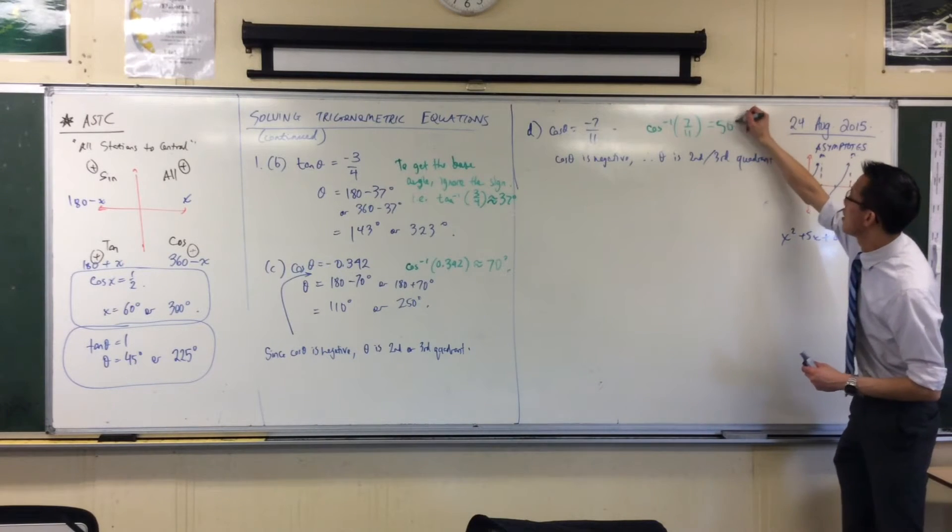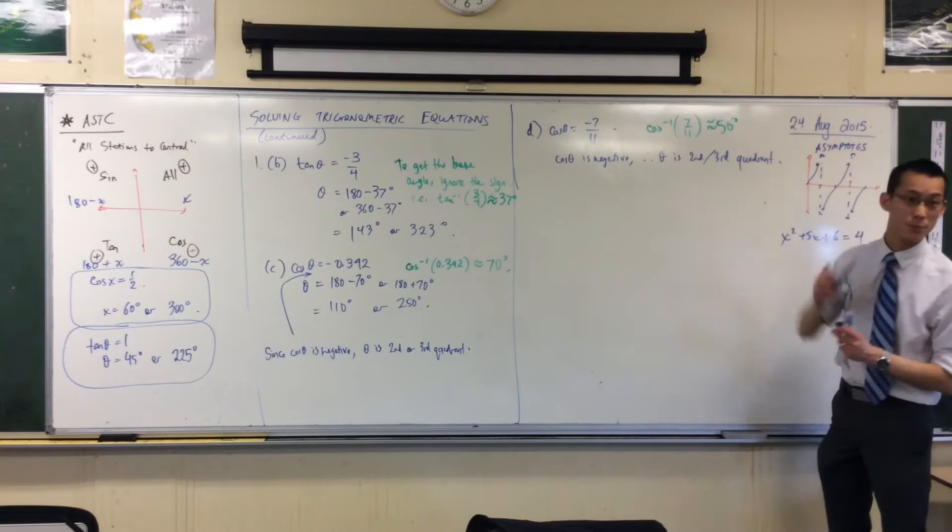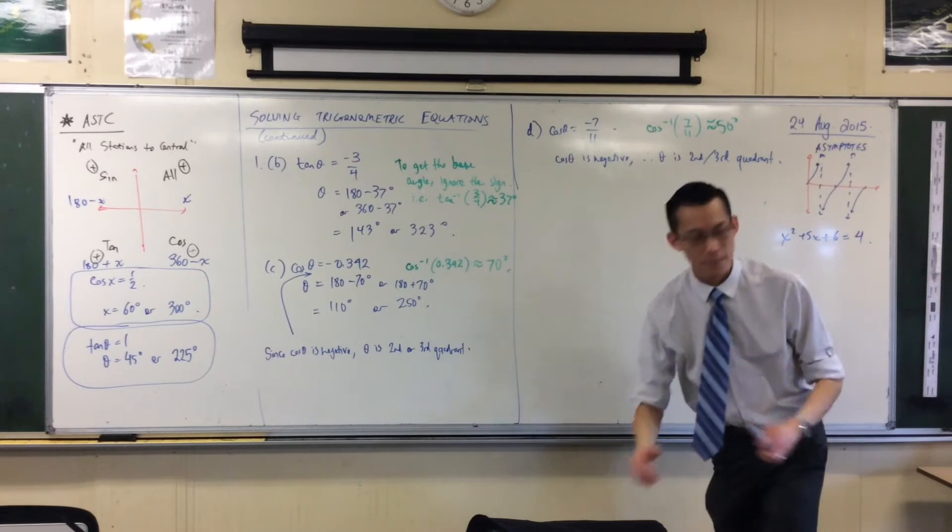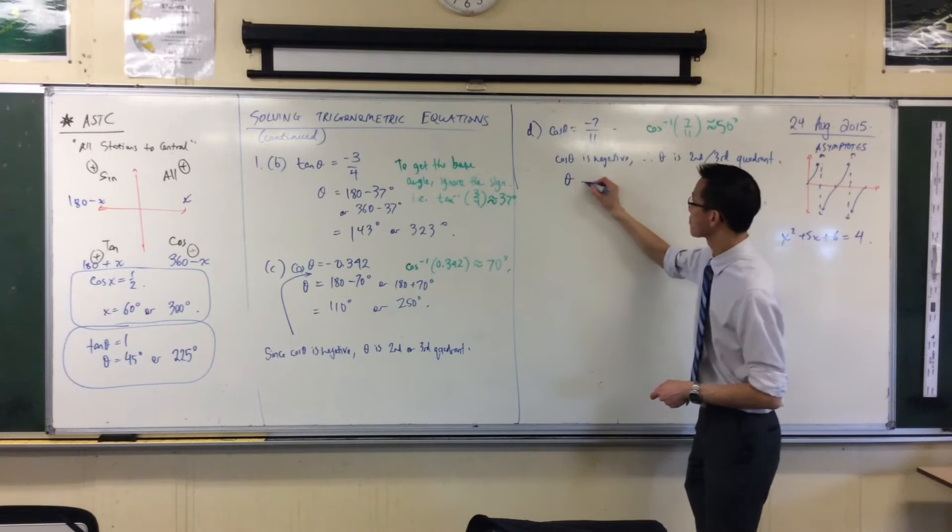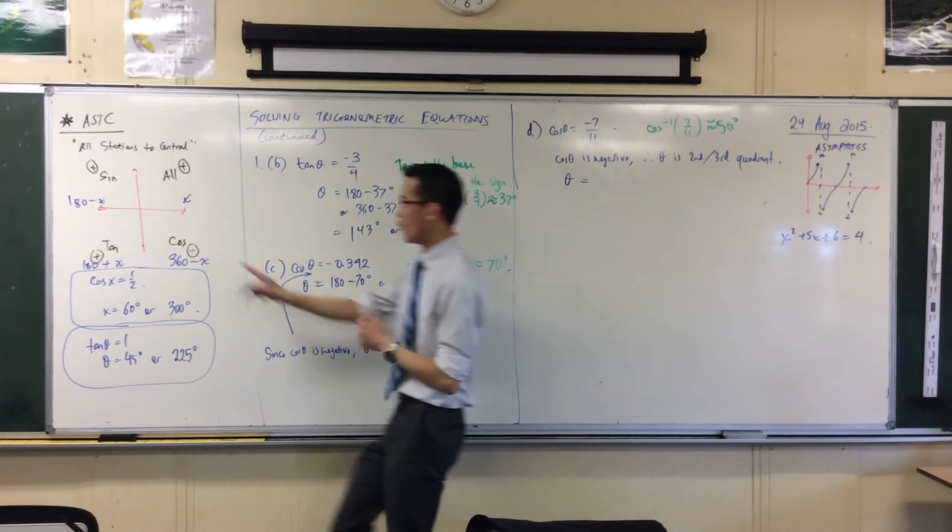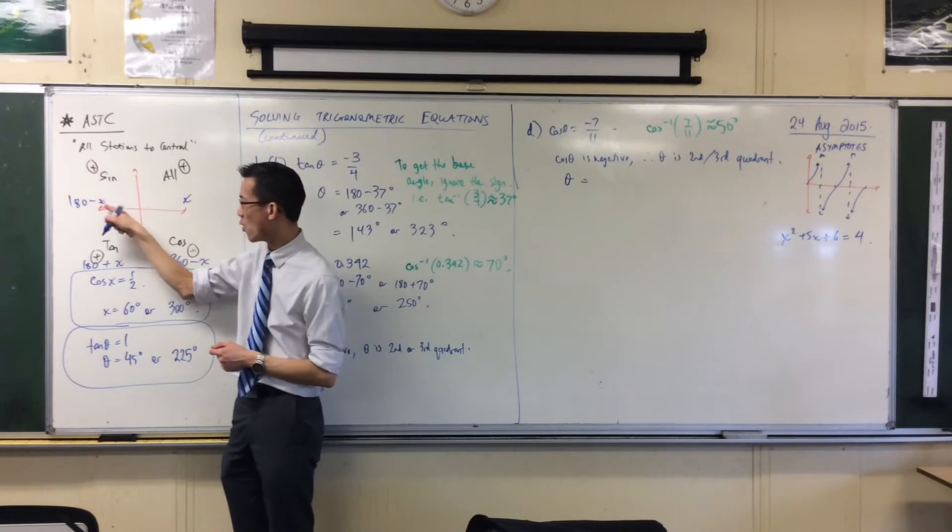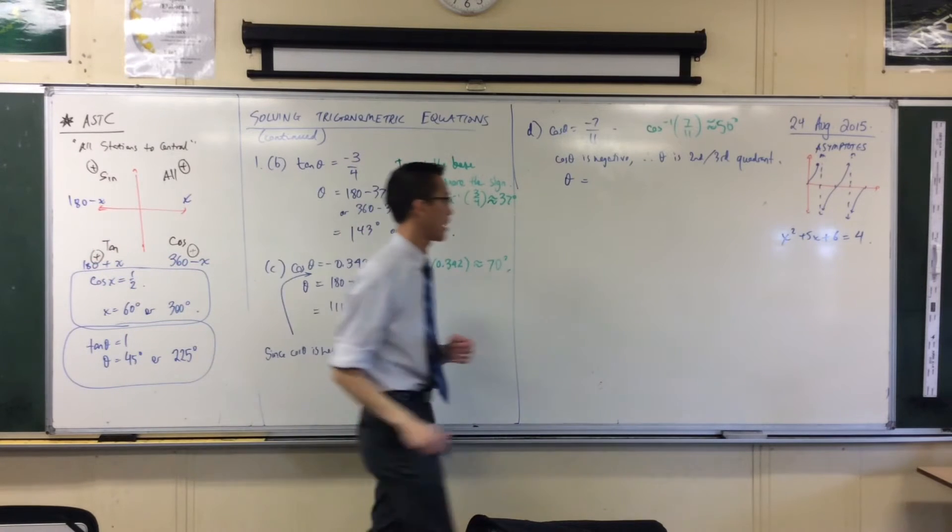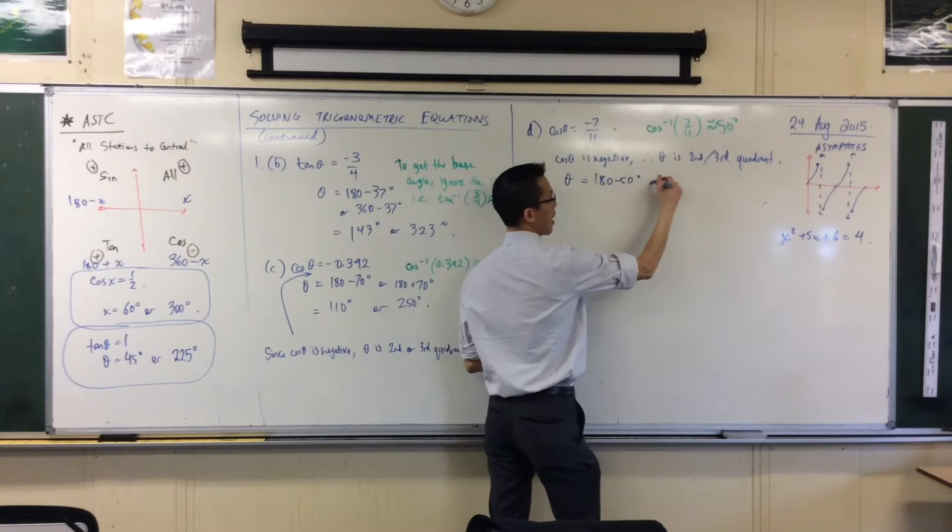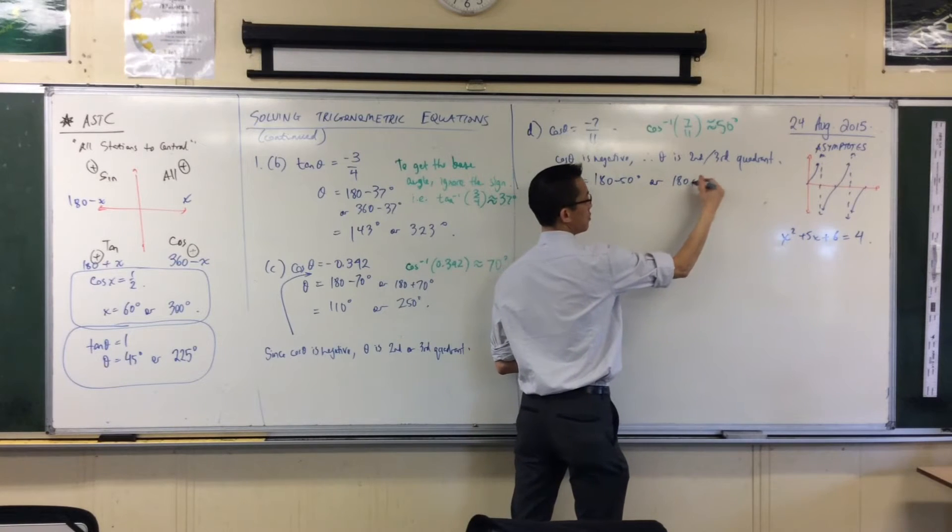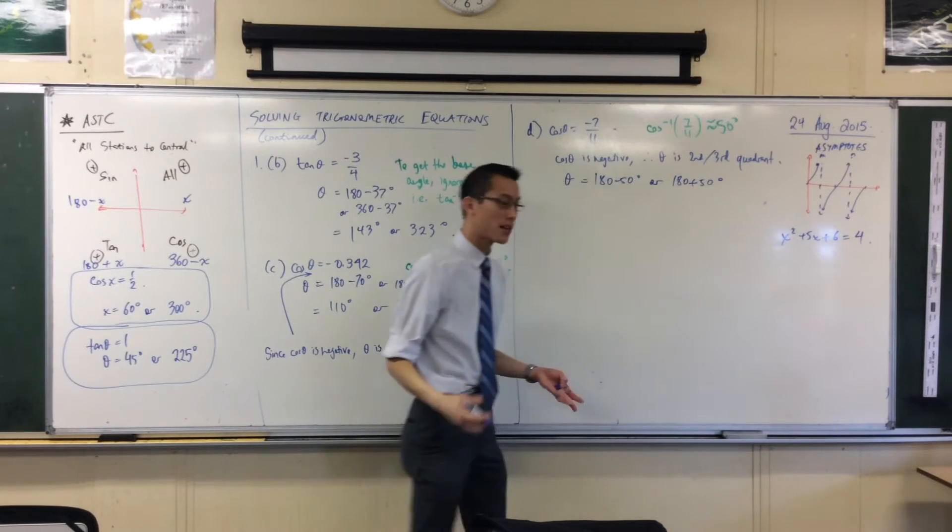Yeah, okay. So there's my approximate angle to the nearest unit. So what am I going to do with this? In the second and third quadrants, it's going to be 180 take away 50, 180 plus 50.